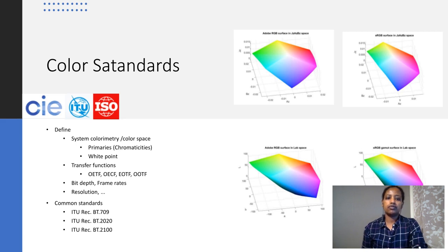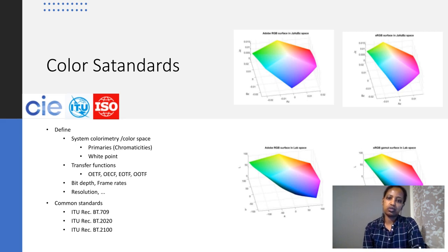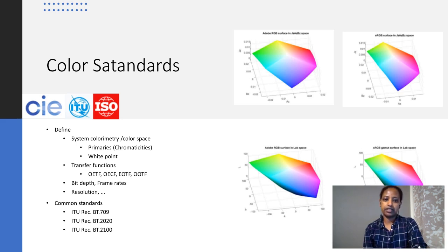For color standards, different international standardization organizations have introduced various standards for different applications. These standards define the system colorimetry or color space and transfer functions to transform different input signals to display devices.